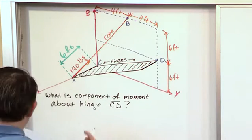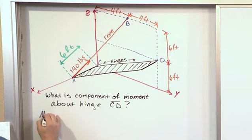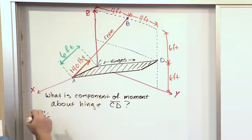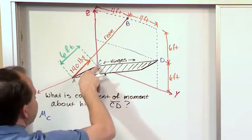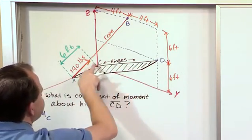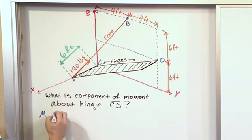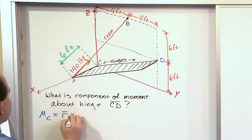So what we want to do is ultimately we want to find the moment about point C and then we'll end up dotting that moment that's developed there with some unit vector that lies in that direction. So that vector is going to be R crossed with F.